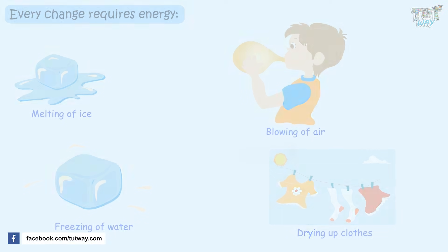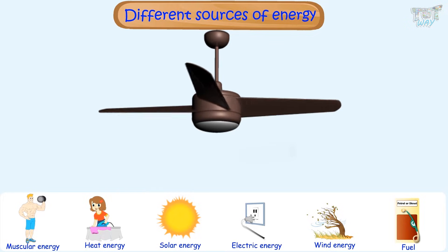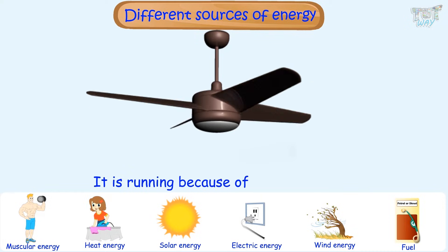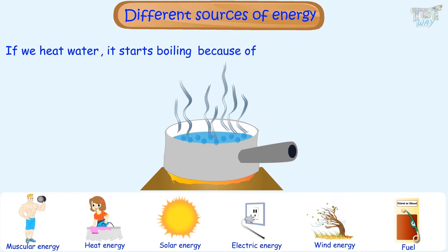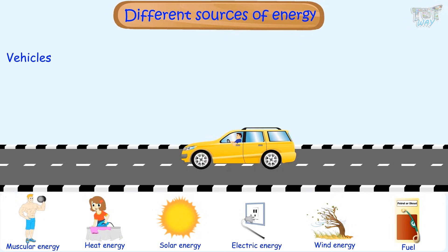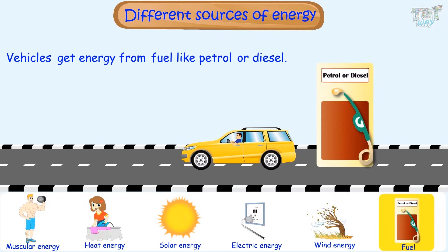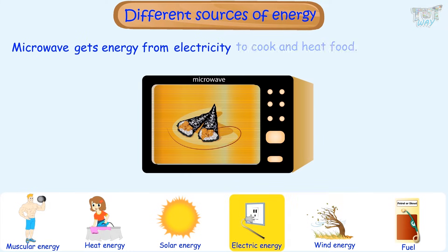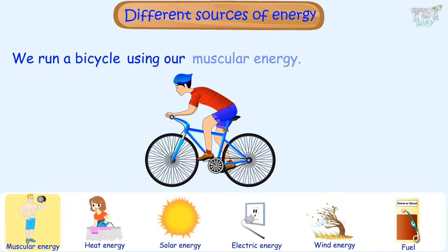Now let's see where this energy comes from, or let's learn about the different sources of energy. If we switch on the fan, it starts running — it gets electrical energy. If we heat water, it starts boiling because of heat energy. Vehicles like cars and bikes get energy from fuel like petrol or diesel. Microwaves use electricity to cook and heat food. We ride a bicycle using our muscular energy.